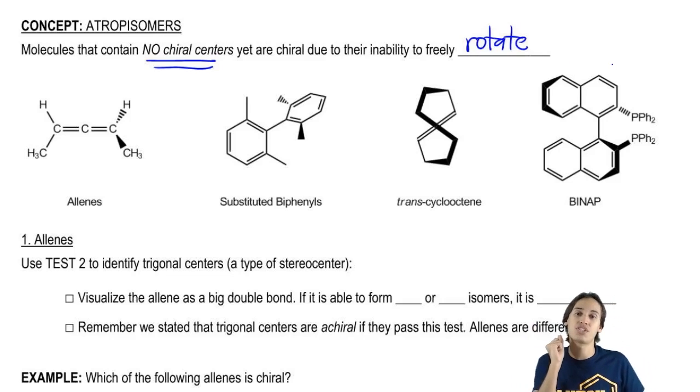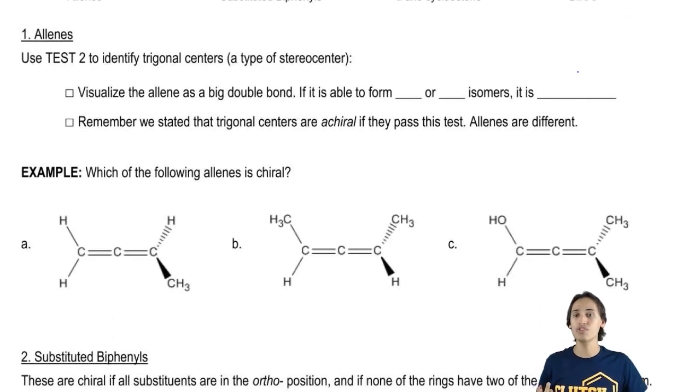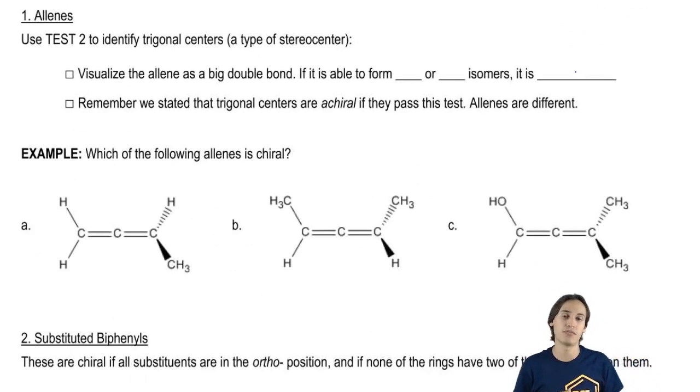What I want to do is teach you tests for the two most common ones, which are allenes and substituted biphenyls. The other ones don't really need rules, so you're fine. You can just always assume that they're going to be chiral. But it turns out allenes and substituted biphenyls can be chiral or they cannot be chiral, depending on the rules that they follow.